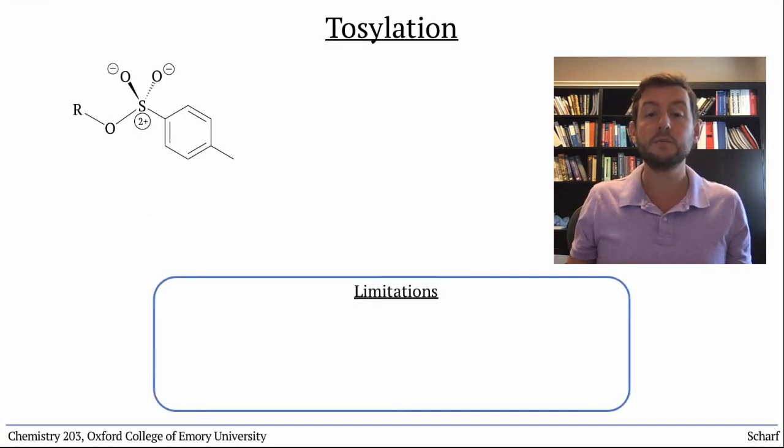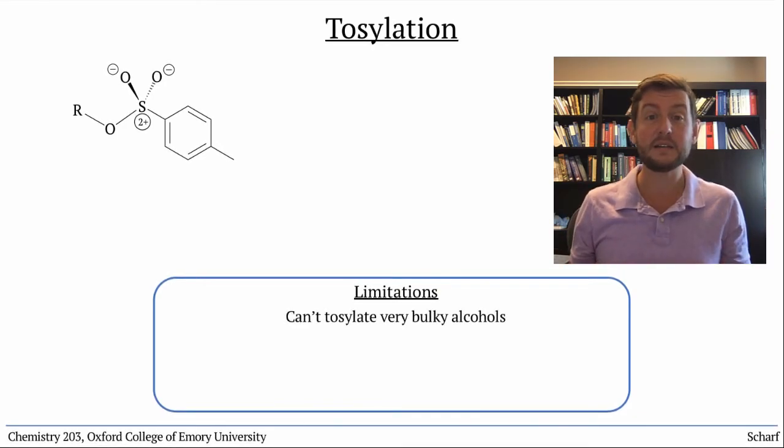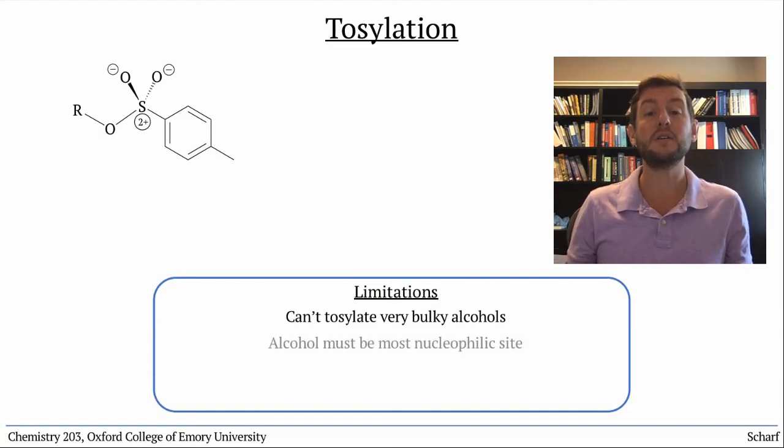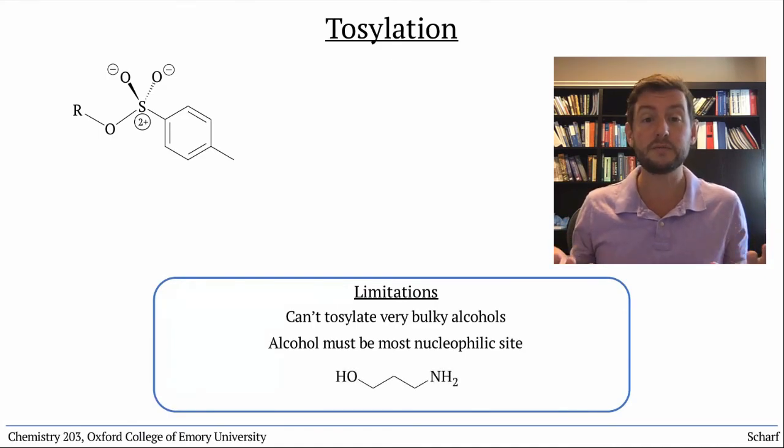There are a few caveats to tosylation. Since the installation of the tosyl group occurs by an SN2 mechanism, really bulky alcohols can't be tosylated easily. In fact, it's almost impossible to tosylate tertiary alcohols. And tosylation can only be done when the alcohol is the most nucleophilic site within the molecule. Amino alcohols, for instance, are tosylated at nitrogen rather than oxygen.